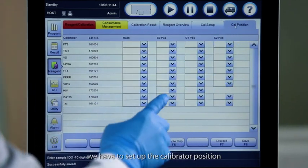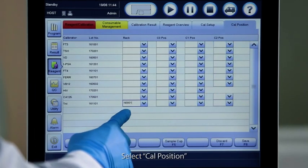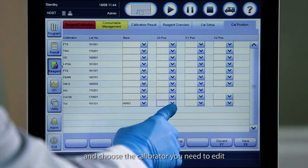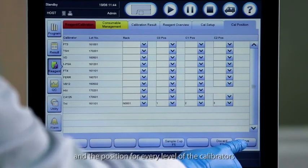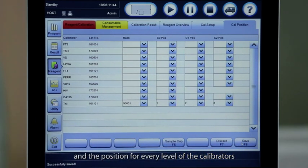After finishing this, we have to set up the calibrator position. Select cal position and choose the calibrator you need to edit. Choose a rack number or lane number and the position for every level of the calibrators.